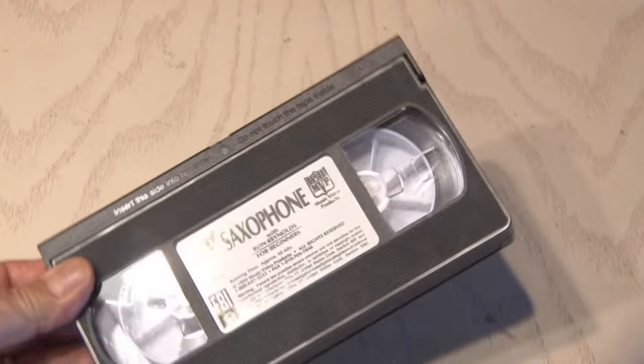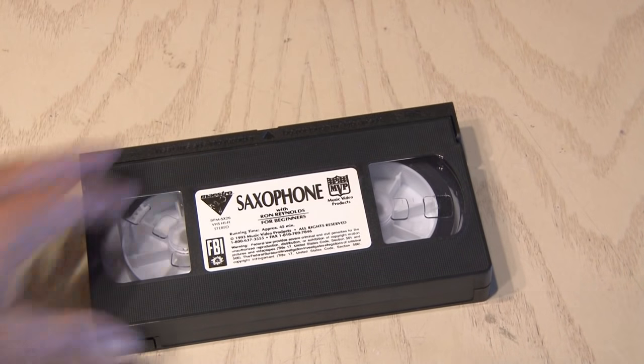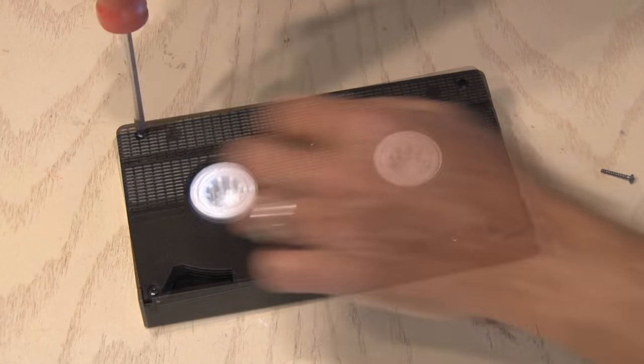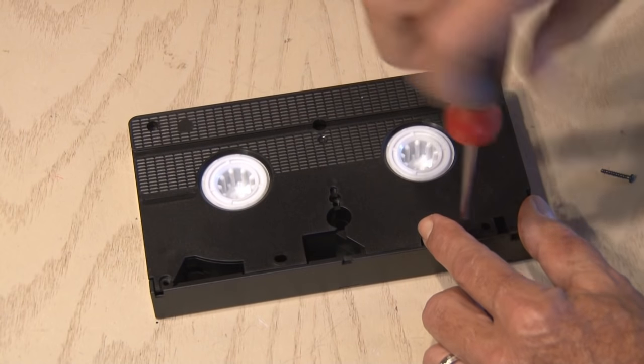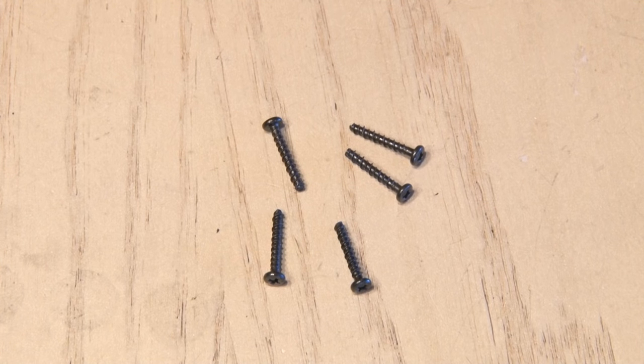Alright, I'll use the saxophone tape for this VHS tape hack project. We got to get inside, so I'll remove all the screws. In this case, there were five of them, and we're going to hang on to those because we need to put this back together later.